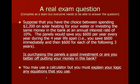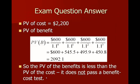Let's see what the correct answer would look like. The present value of the cost is, we're paying that right away, that's $2,200. The present value of the benefit, then we need to get those benefits in every year and correctly discount them.